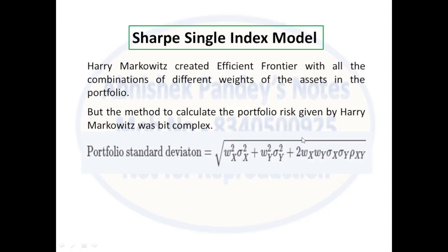We also need to calculate the individual covariances of all stocks in the portfolio, and apart from that we need to calculate the correlation between each pair of stocks. Suppose there are two stocks in the portfolio — only one correlation is needed. But if there are three stocks, you need to calculate three correlations. Similarly, as the number of stocks keeps increasing, it becomes very complex to calculate the correlation between each stock and then put all those values into the formula.